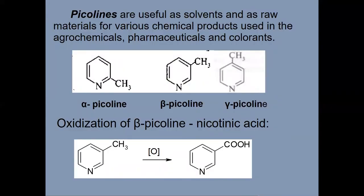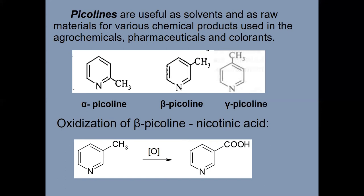Picolins are useful as solvents and as raw materials for various chemical products used in agrochemicals, pharmaceuticals, and colorants. Alpha-picoline, beta-picoline, gamma-picoline, or 2-methylpyridine, 3-methylpyridine, 4-methylpyridine. Oxidation of beta-picoline gives the product nicotinic acid.